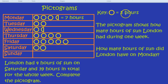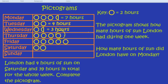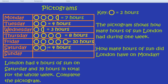Each circle is two hours, so two circles is going to be four hours. One and a half circles — well, one circle is two hours and half a circle is one hour — so that will be three hours on Wednesday. Thursday has four circles: four times two equals eight hours. Friday has five circles: five times two is ten hours. Saturday, as we saw, had four hours. So what have we got so far?